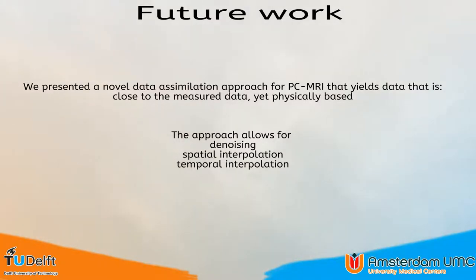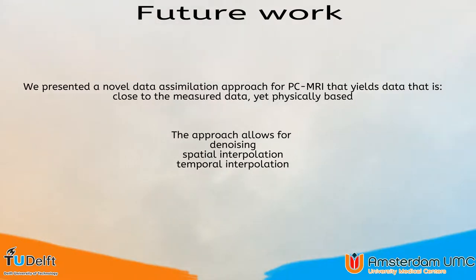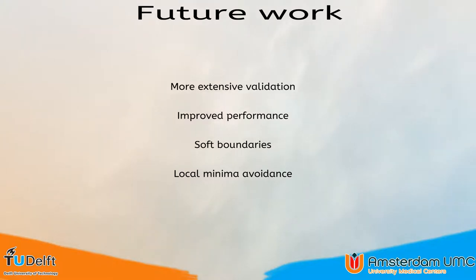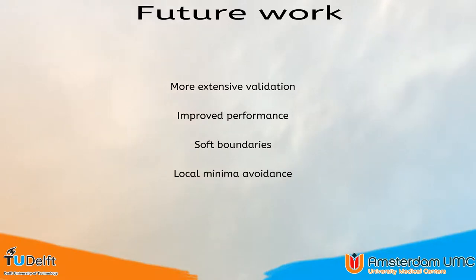In conclusion, we presented a new data assimilation approach for PC-MRI that can be used for denoising, spatial interpolation, and temporal interpolation, yet it yields data that is close to the measured data and is physically based. The implementation, as well as the comparison with related work and a dataset, is available as additional material of the paper. For future work, we would like to improve the validation, use more datasets, and validate that all the flow features are still present in the data. We also wish to improve the performance — currently the algorithm is memory-hungry and the worst use case took about 45 minutes to converge.